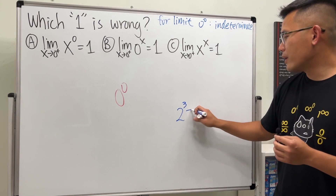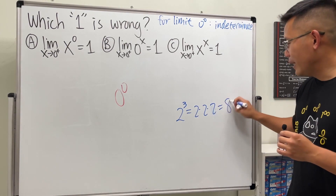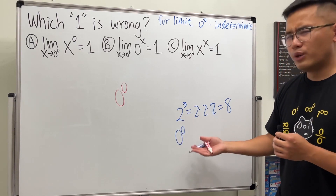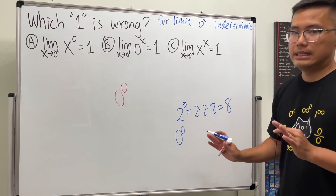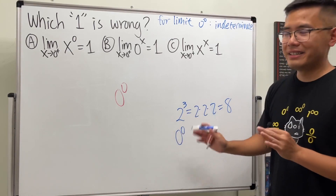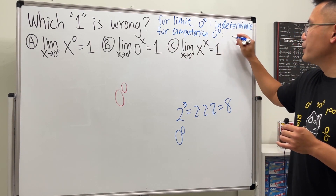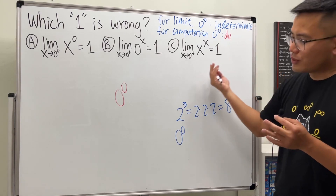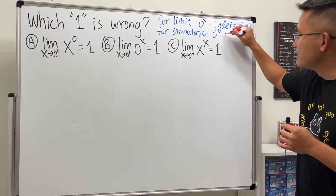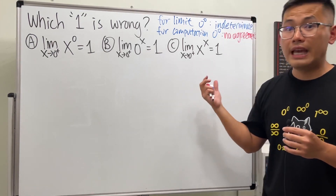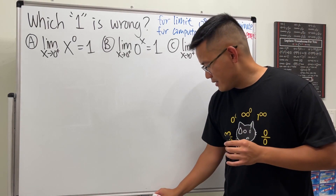Today we're talking about computation. For example, two to the third power is two times two times two, which equals eight — that's computation. But if we're talking about zero to the zero as a computation question, it's debatable: is it undefined or is it one? There is no agreement on this yet, so it could be one or undefined — you guys can discuss it in the comments.